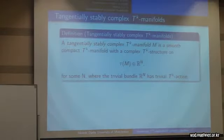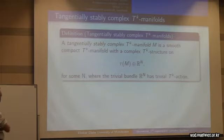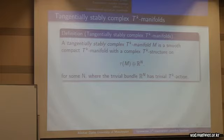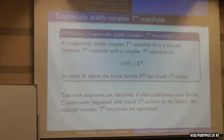We begin with the definition of a tangentially stably complex TK manifold. This is a smooth compact manifold with a smooth TK action that has a complex equivariant structure on the stabilised tangent bundle — the direct sum of the tangent bundle with some additional copies of the trivial bundle, which we also assume has a trivial action, for some n greater than or equal to 0. There's an equivalence relation on such structures: if we stabilise with further copies of C, their induced complex structures are equivalent.